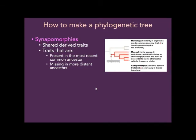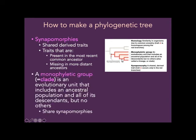Let's talk about synapomorphies. A synapomorphy is a shared derived trait. 'Syn' means same, 'apo' like apex means top, and 'morphy' means forms. So a synapomorphy is a trait present in the most recent common ancestor but missing in more distant ancestors — it's a trait your monophyletic group shares that the ancestors don't have. A monophyletic group is the same thing as a clade — an evolutionary unit that includes an ancestral population and all of its descendants, but no others. Monophyletic groups share synapomorphies with each other.